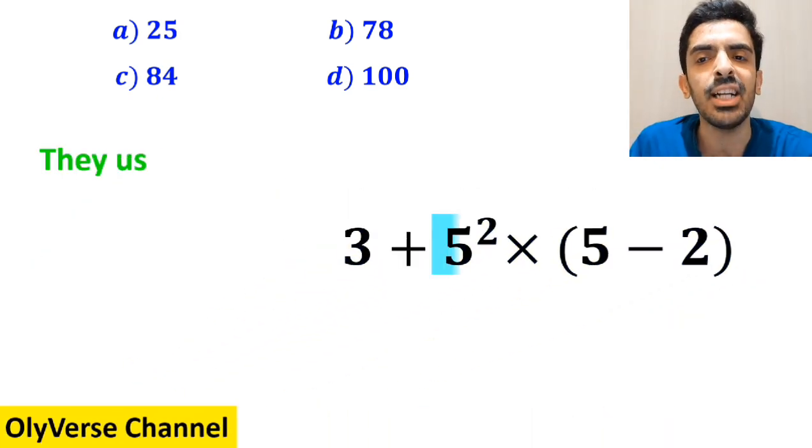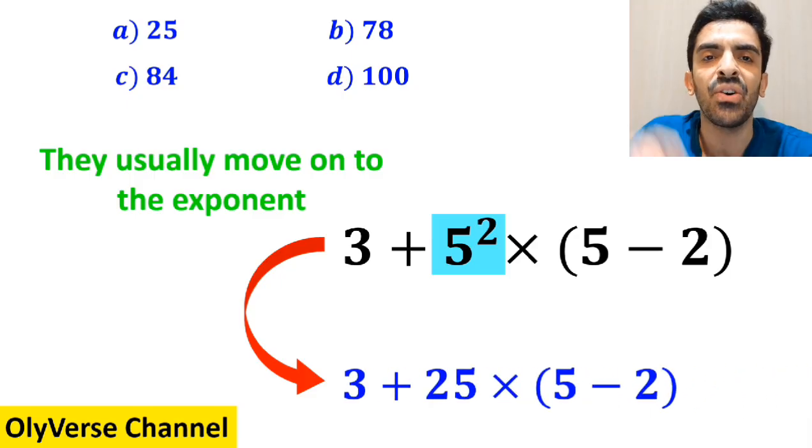And the next step, they usually move on to the exponent, and replace this expression with 3 + 25 × (5 - 2).